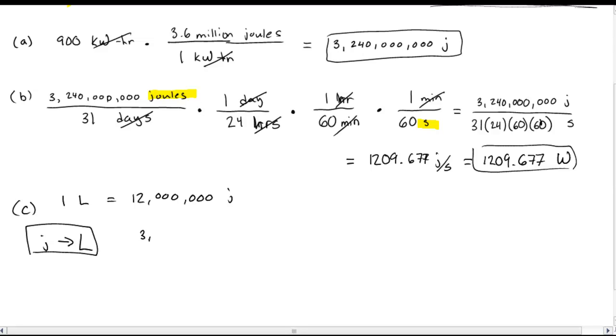So I had 3,240,000,000 joules. Now this conversion factor tells me, now if joules is on the top, I want joules on the bottom. 12,000,000 joules is equal to 1 liter. Joules cancel. So now I have 3,240,000,000 over 12 million. And what's my label? That's the only thing left. And so if I type that in the calculator, you get roughly 270 liters. So there's one answer, 270 liters.